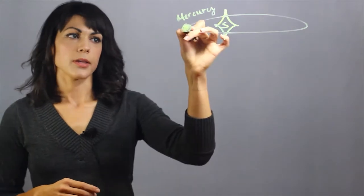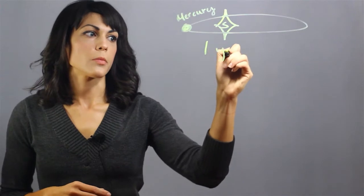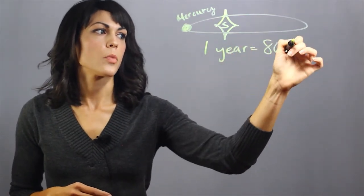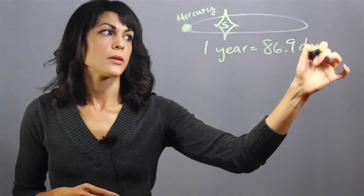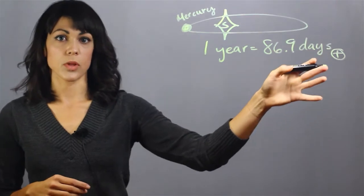Now we define a year as the time it takes Mercury to go around the Sun. One year on Mercury is equal to 86.9 days here on Earth, and I will be using the circle with a cross in the center to symbolize Earth.